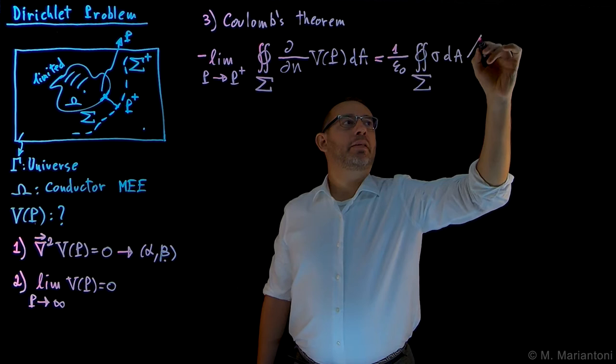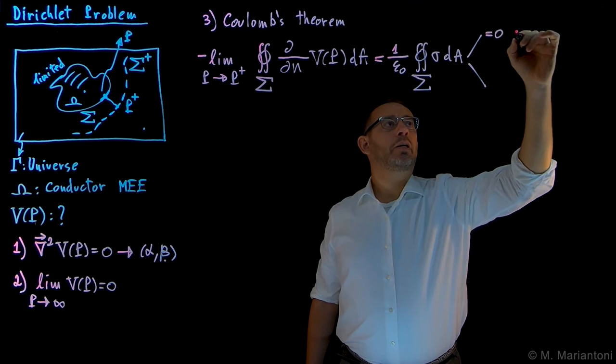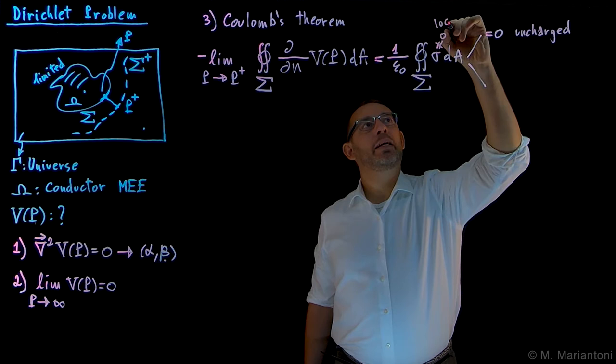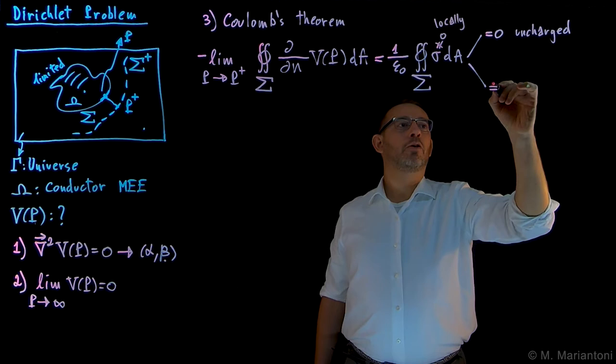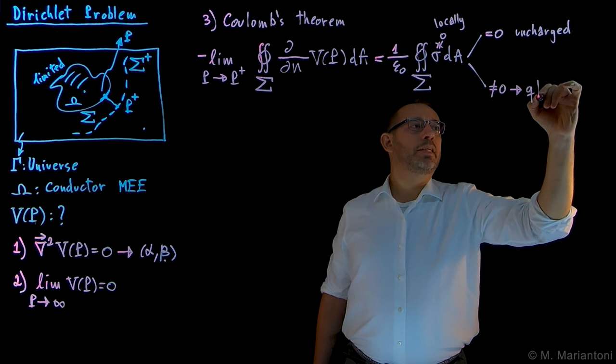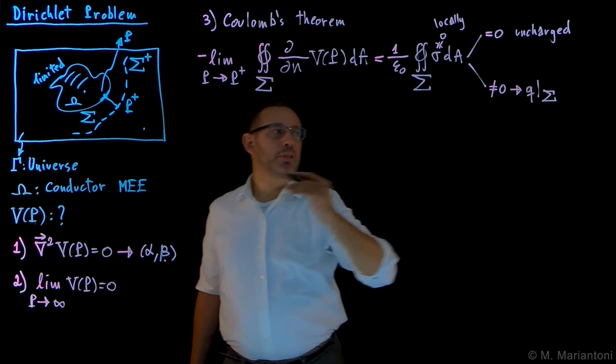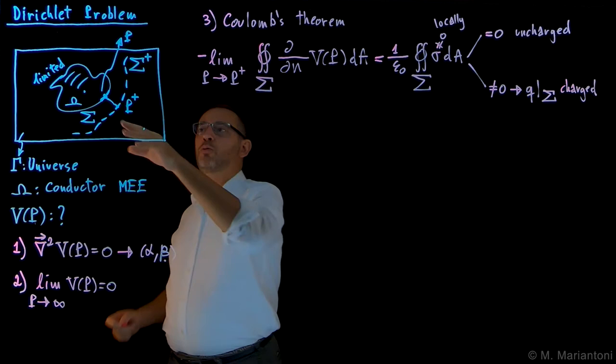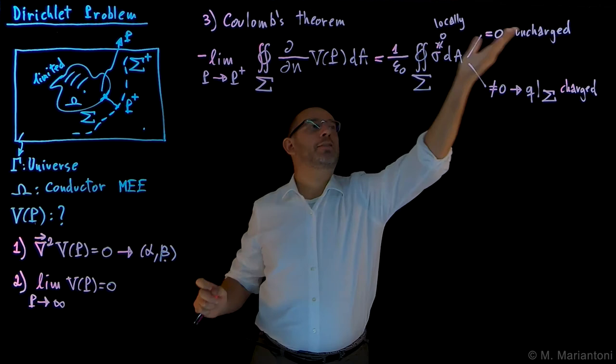Typically there are two cases. This quantity could equal zero if the conductor was uncharged. Note that locally σ can be different from zero, but globally when you integrate, if the conductor is uncharged, the total is zero. Of course, it could be different from zero — equal to a charge Q on Σ — and we know that in macroscopic electrostatics Q can only reside on Σ. This is true if the conductor was originally charged. The reason we have a non-zero local σ is because we need to expel E within the conductor.